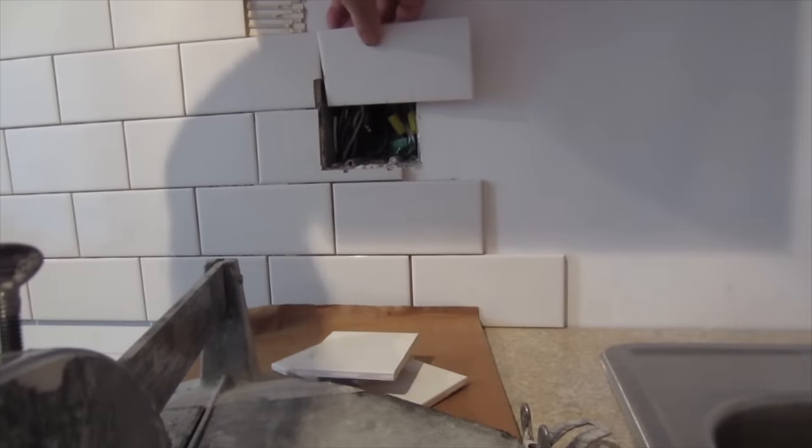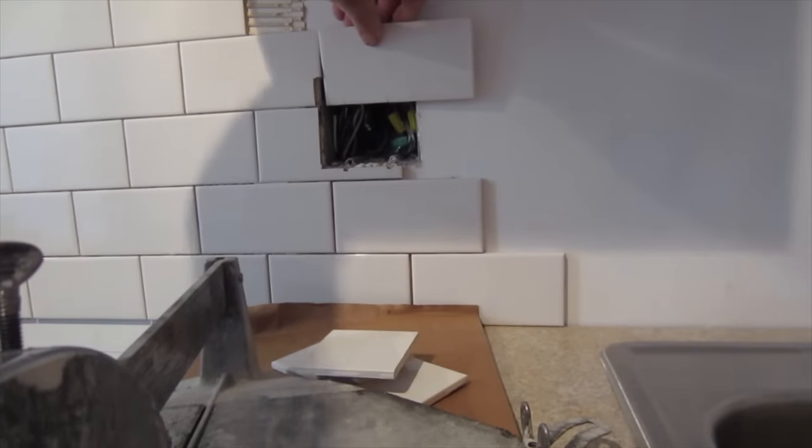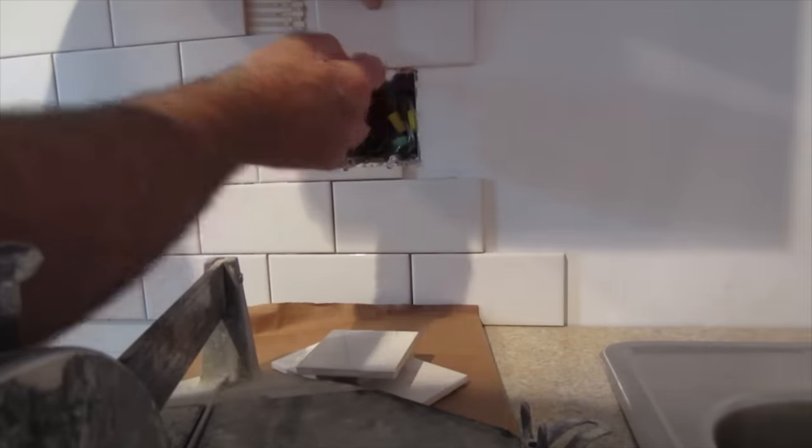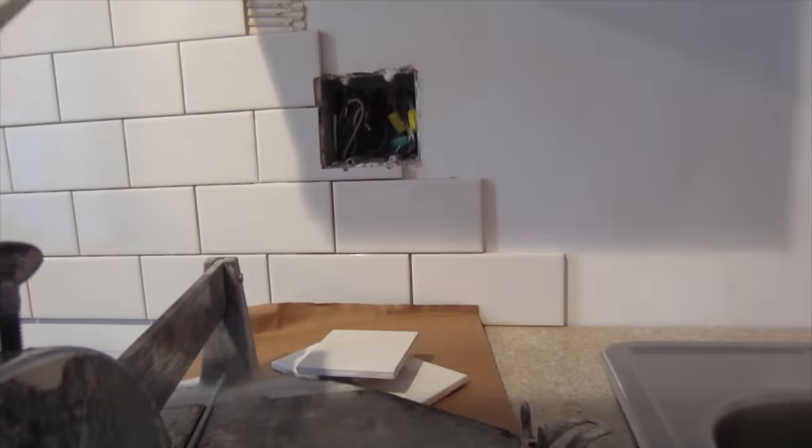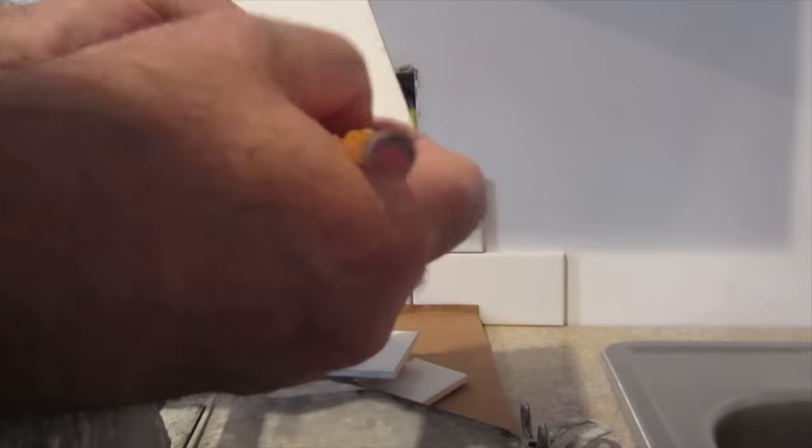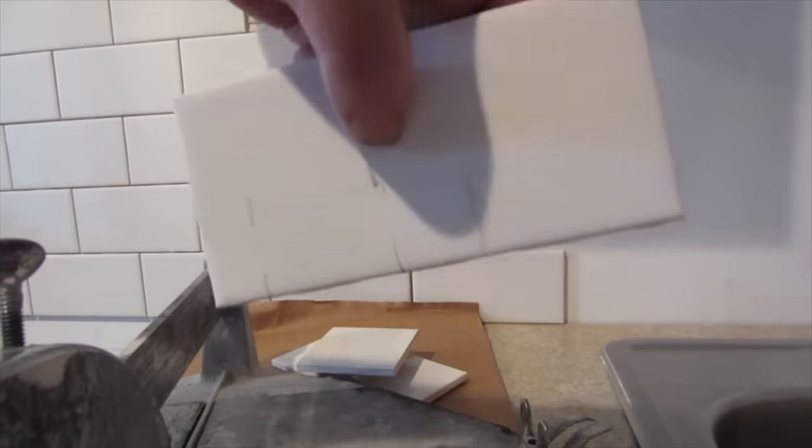I'm cutting around this here so I mark this line here and this line here and I mark these two little lines there. So I'm going to cut that like that. I'm going to cut around that now on the wet saw.